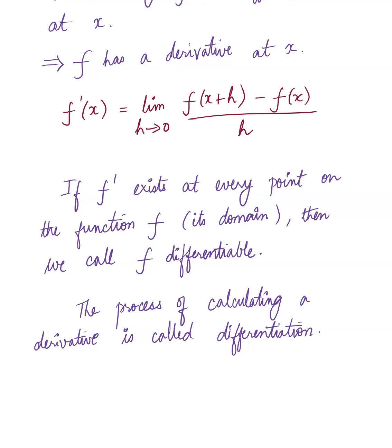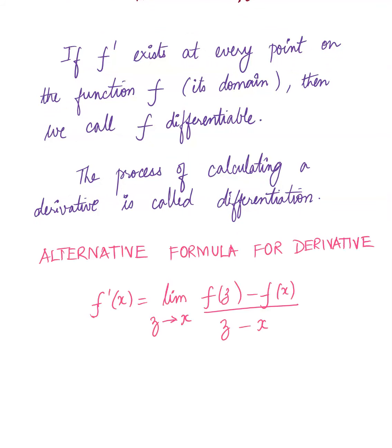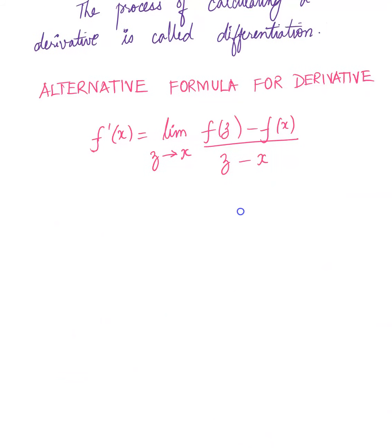Now we have an alternative formula for the derivative. So here we have f prime of x to be limit z approaches x, f of z minus f of x over z minus x. This formula is an alternative, but the advantage is that you can see it more visibly as y2 minus y1 over x2 minus x1, where x2 is approaching x1. Instead of x2 and x1, we have z and x. The traditional formula involving h is helpful especially when only one point is given and you can generate the other point with a plus h. Both formulas have their advantages — use the one that is useful for your given problem.